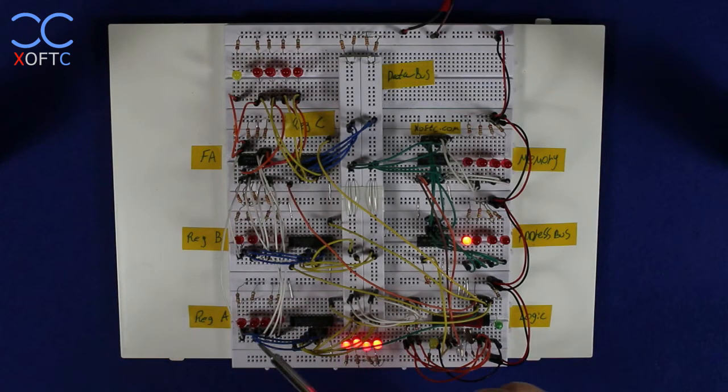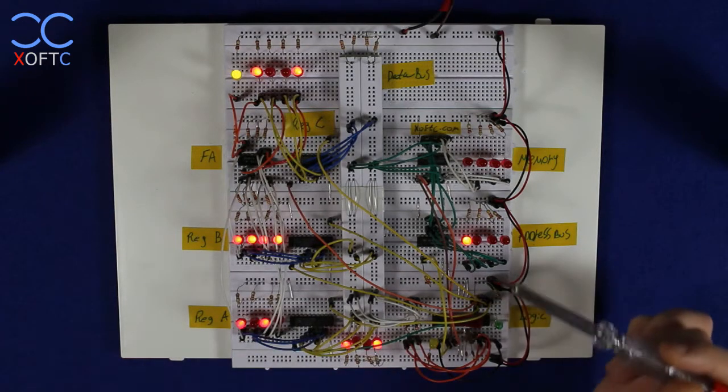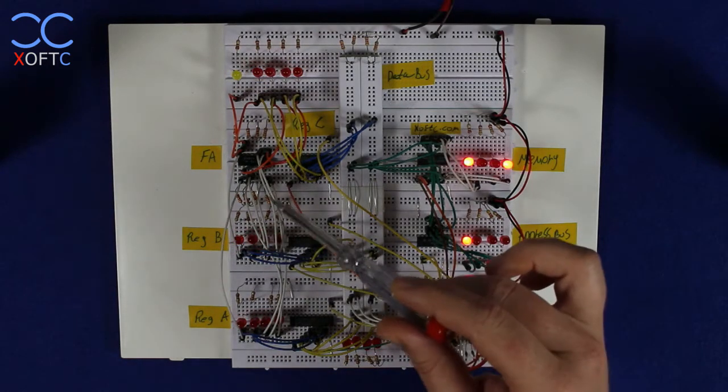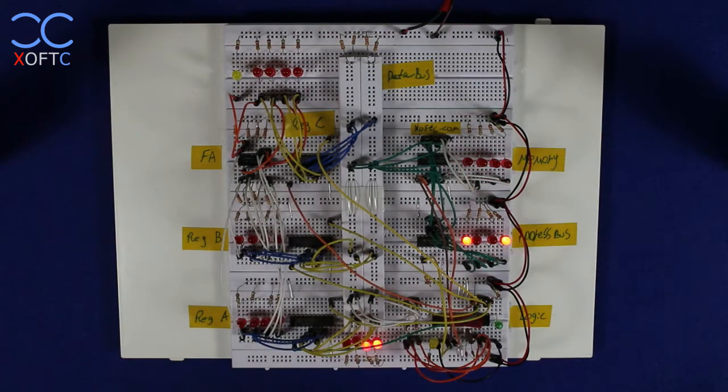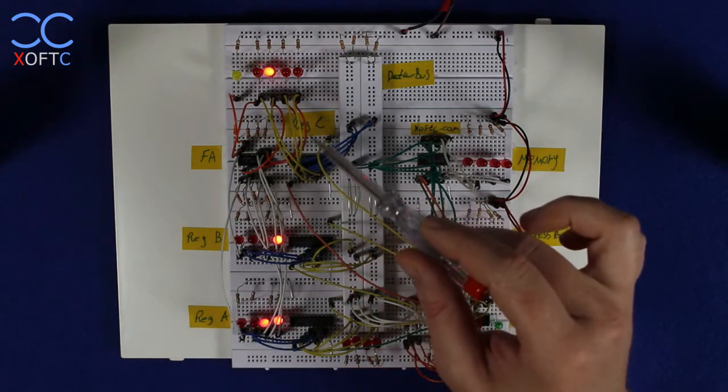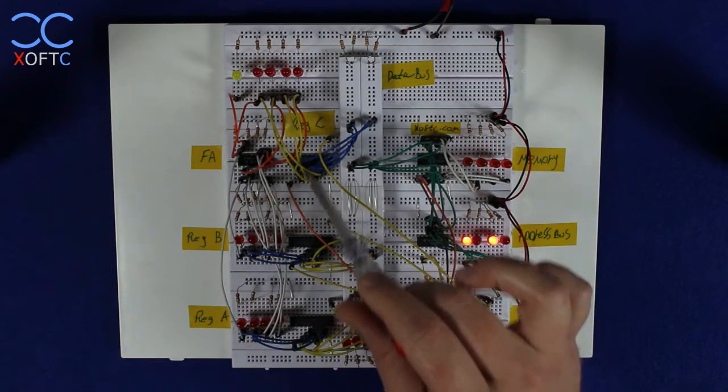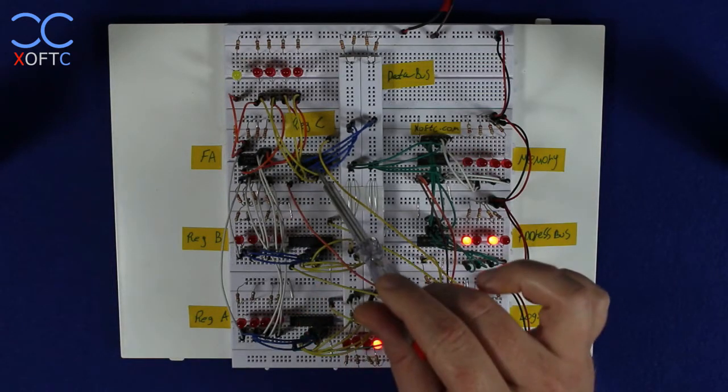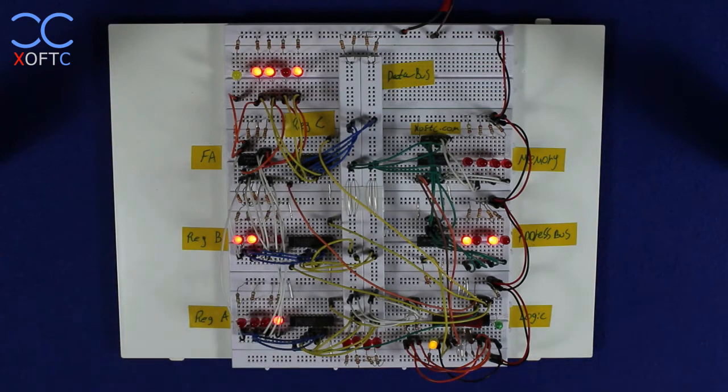Once register A and register B have both values in them, the outputs are raised and the outputs are added using this 4-bit full adder right here and whatever result it gives out it will then latch register C and register C will hold the value from the full adder. These two registers will de-latch so that we lose the values also the outputs are lower.